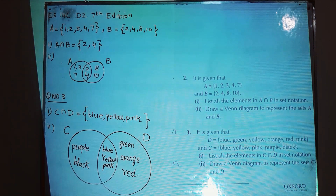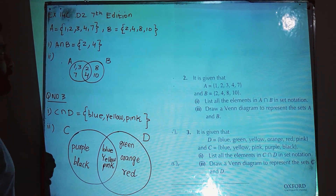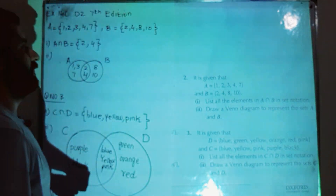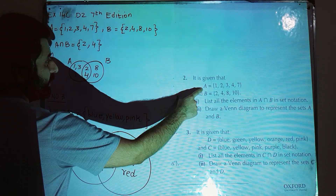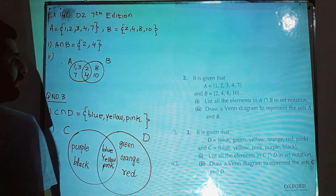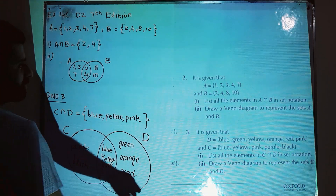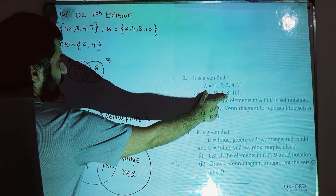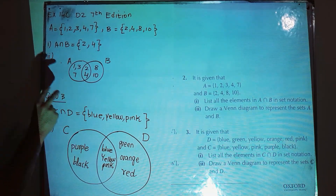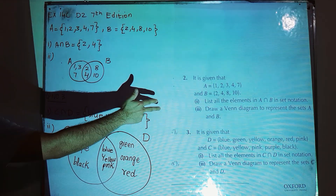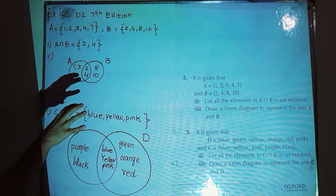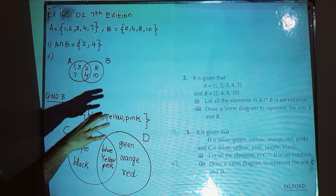In this lesson I am going to start from question number two of exercise 14c of D to 7th edition. Question number two: it is given that A is {1,2,3,4,7} and B is a set that has the elements {2,4,8,10}. They have asked us to do two things: part one is to find A intersection B, and part two is to draw one diagram to represent the sets A and B.